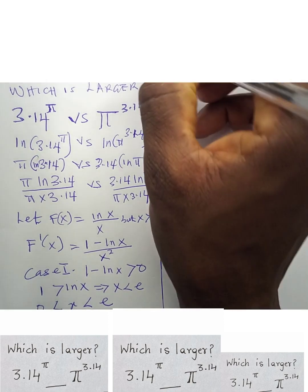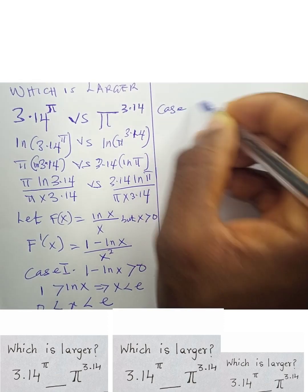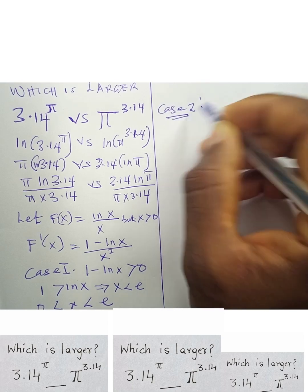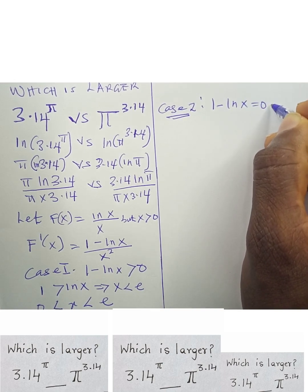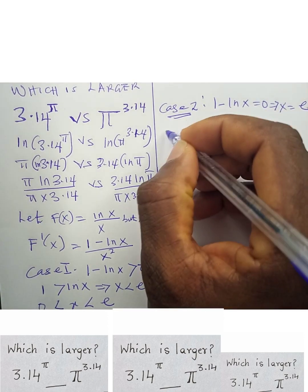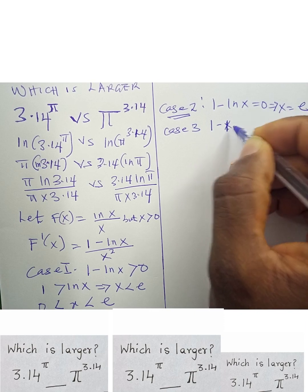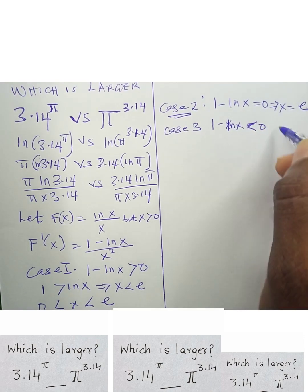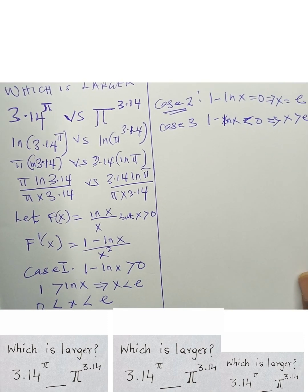Now Case 2: when the numerator equals zero — that is, 1 − ln(x) = 0 — this implies x = e. And Case 3: when the numerator 1 − ln(x) is less than zero, this implies x > e, giving a decreasing function.